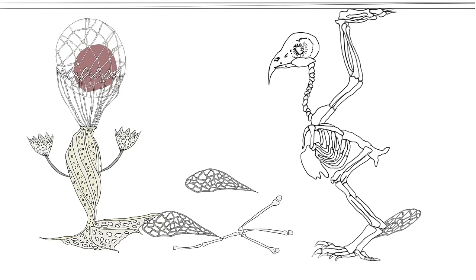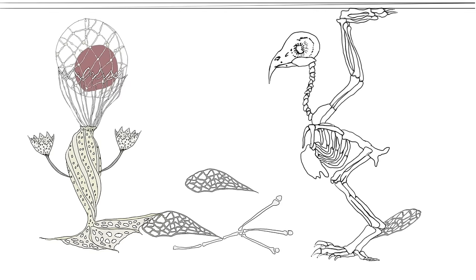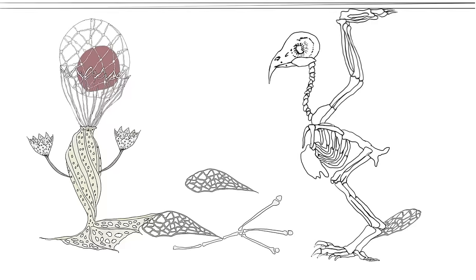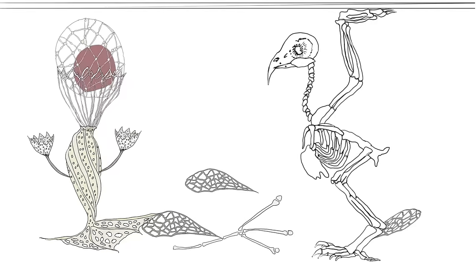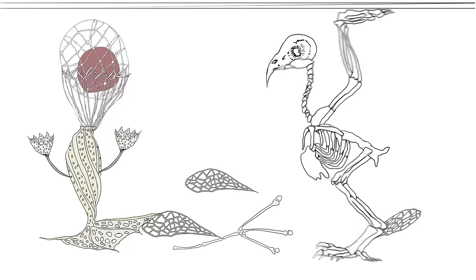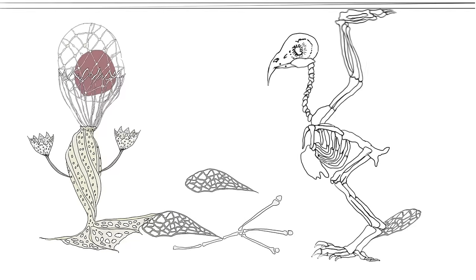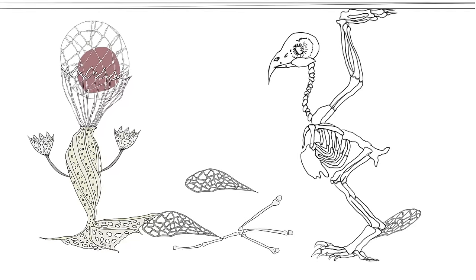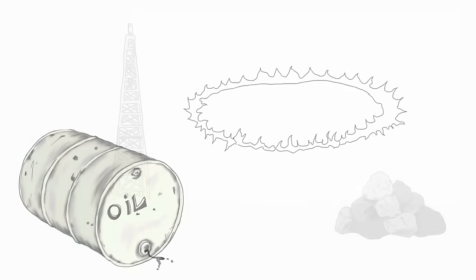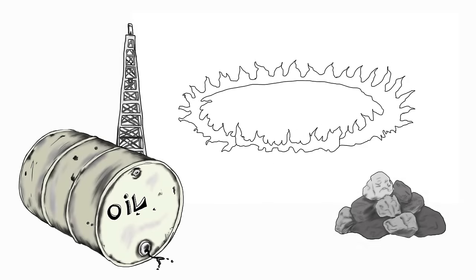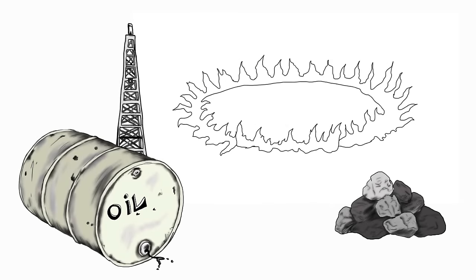But sometimes, carbon-based organisms, like plants or animals, get stuck in the Earth. When this happens, they're compressed under tons of pressure and turned into carbon-based fossil fuels like oil, coal, or natural gas.